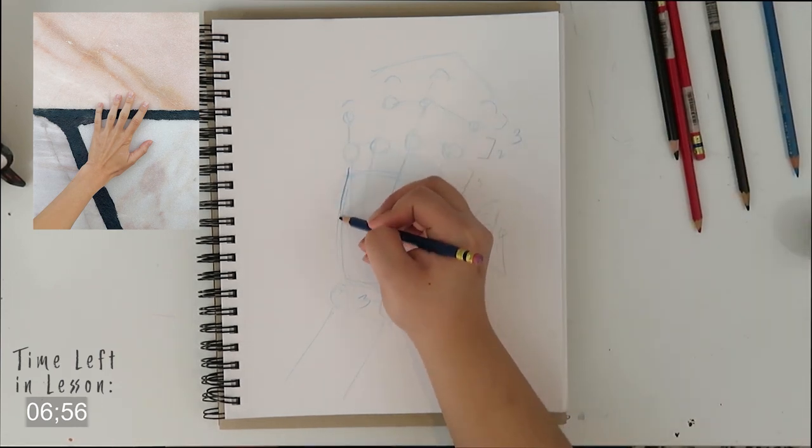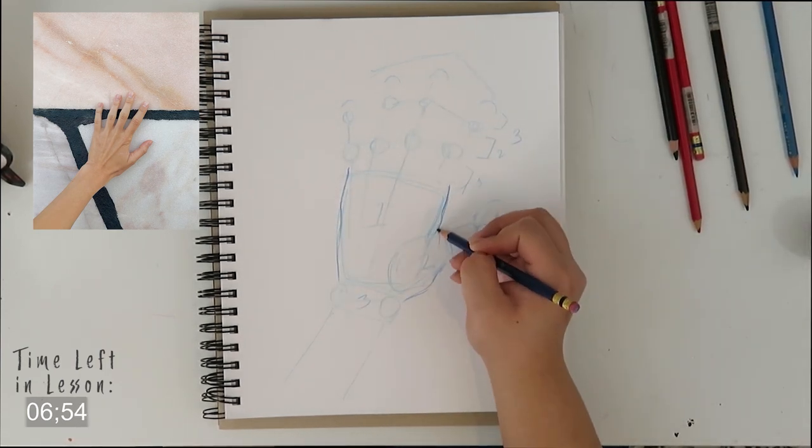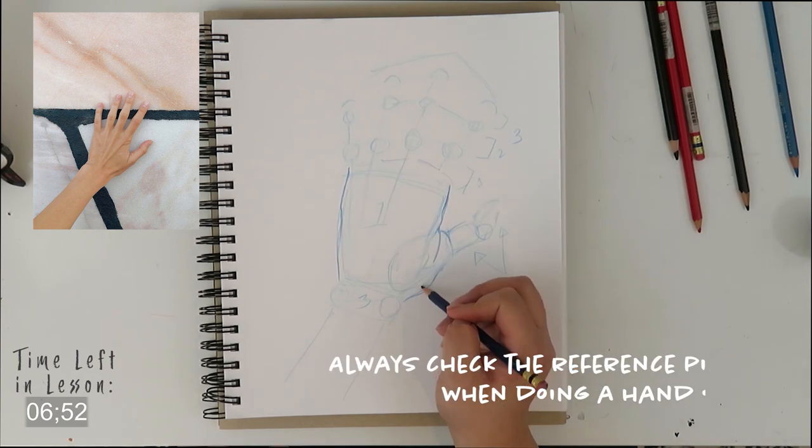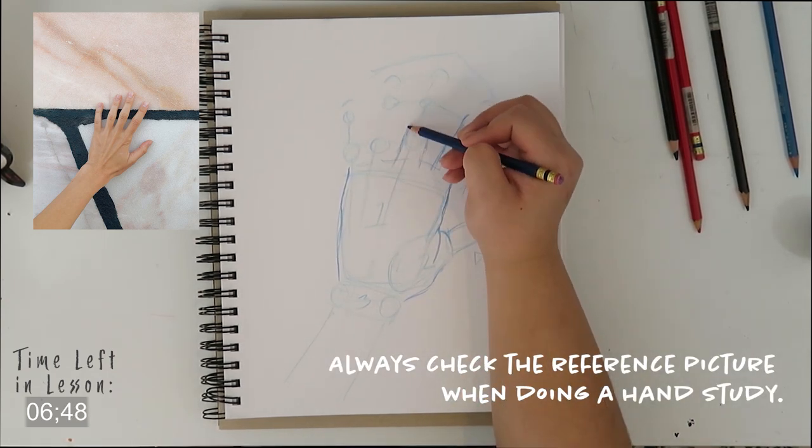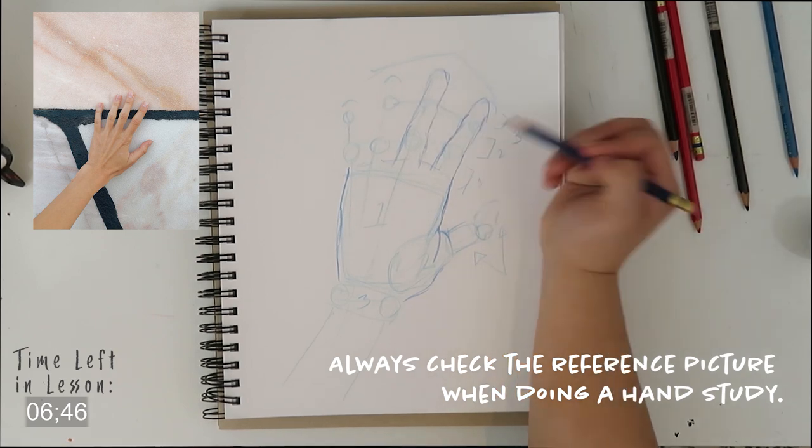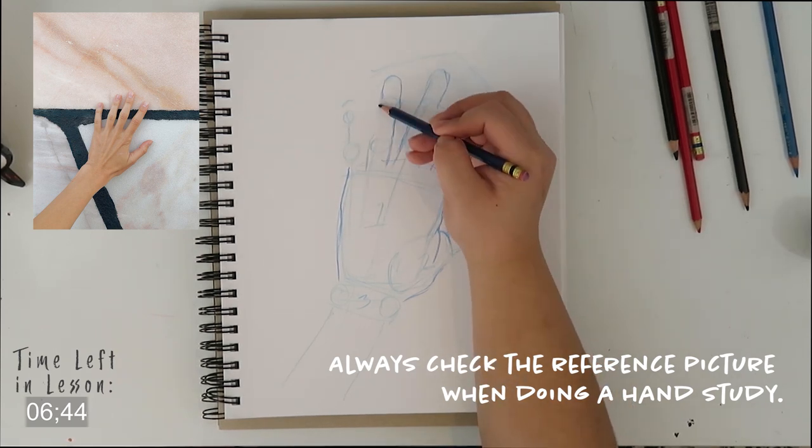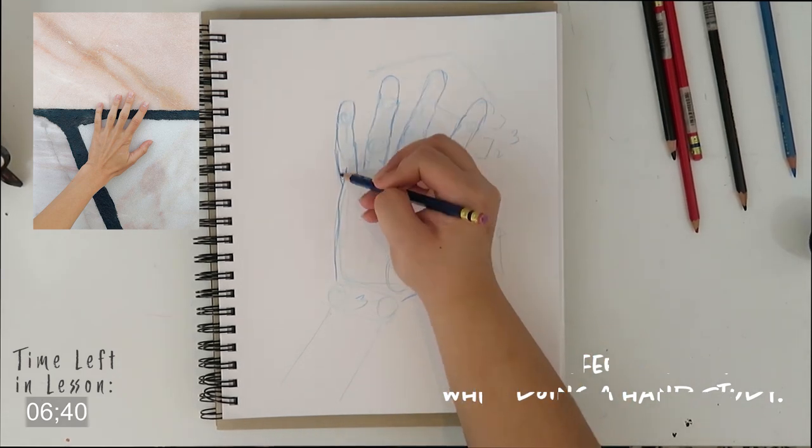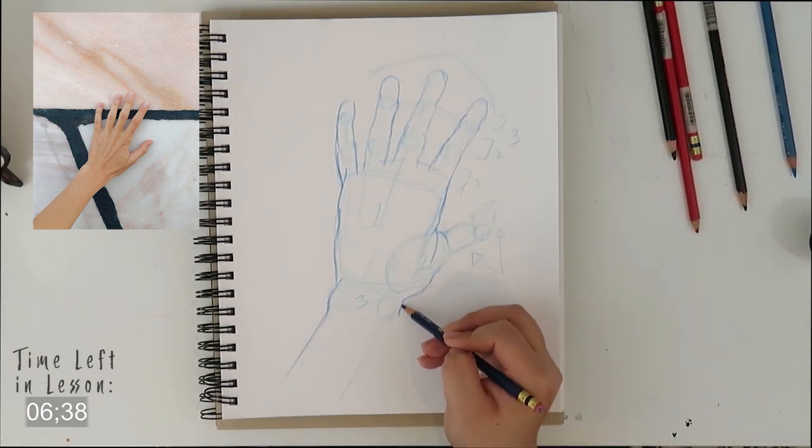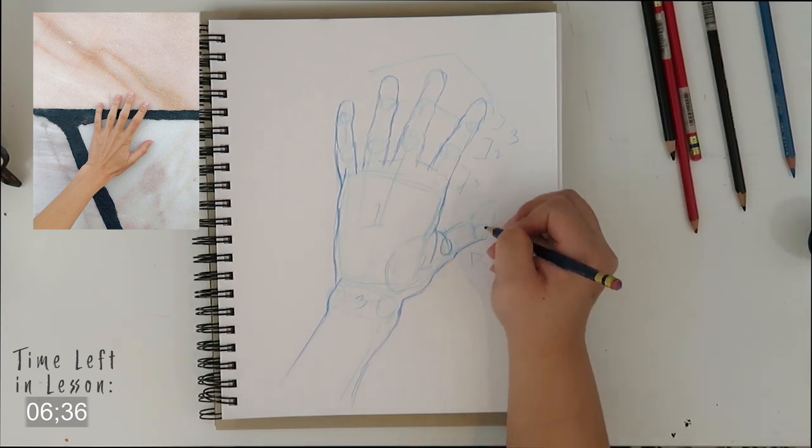The next step is to draw the form of the hand. I'm still always looking at the reference picture for the form, and I'm just using the skeletal outline that I drew before more as a guideline. I'm adjusting the form based on the reference, and I'm not letting the initial skeletal outline that I drew earlier limit the lines that I'm gonna be doing.